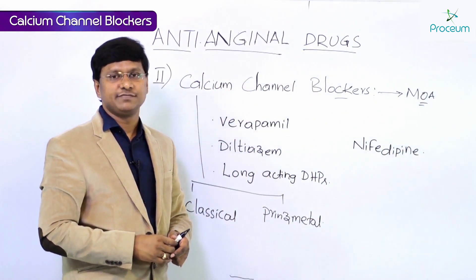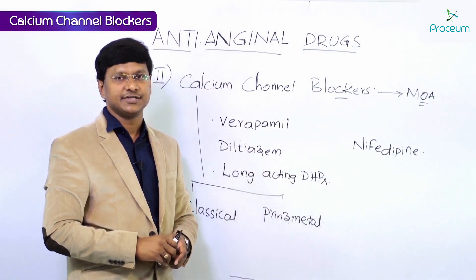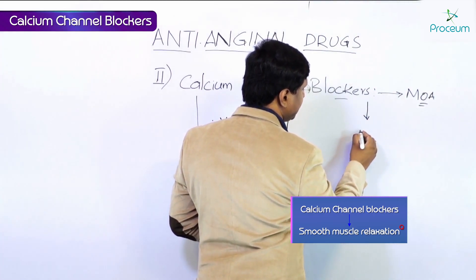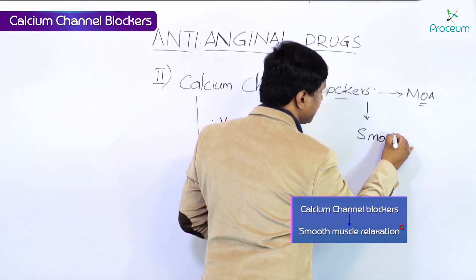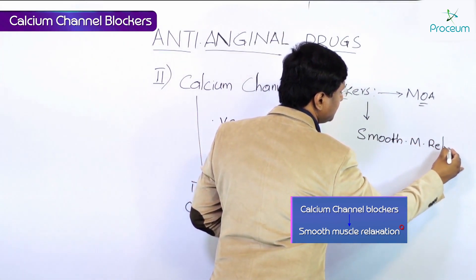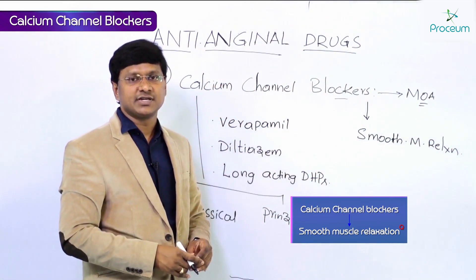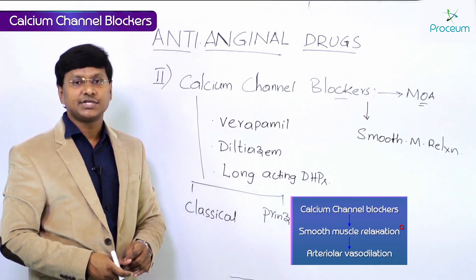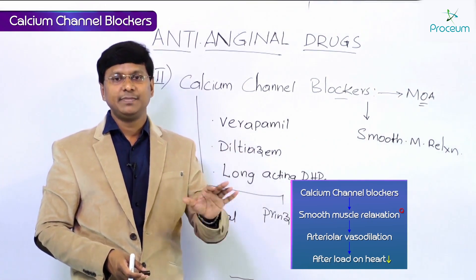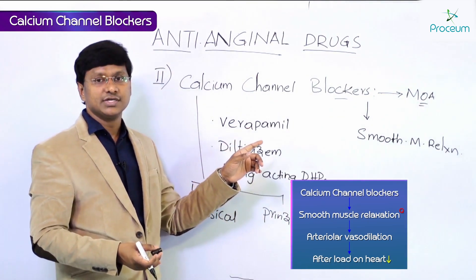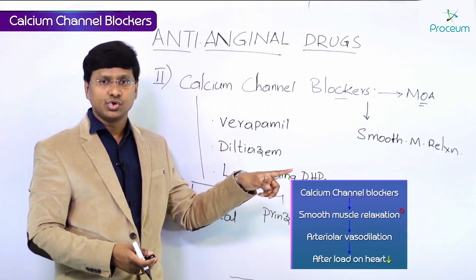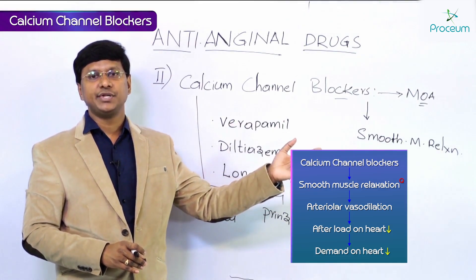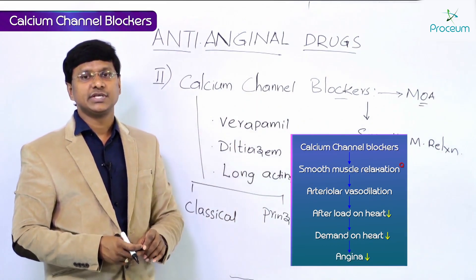The mechanism of action of calcium channel blockers in the treatment of angina is that they cause smooth muscle relaxation, which leads to arteriolar vasodilation. Whenever there is arteriolar vasodilation, the afterload on the heart is reduced. When the afterload and demand on the heart is reduced, the angina is reduced in the individual.